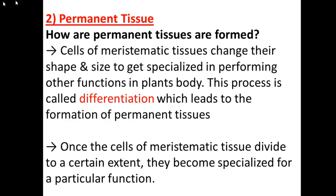When meristematic tissues stop growing and stop dividing, permanent tissues are formed. Once the cells of meristematic tissues divide to a certain extent, they become specialized for a particular function. When differentiation of meristematic tissues leads to the formation of permanent tissue, the cells stop dividing and become specialized, gaining special abilities to perform their specific functions.